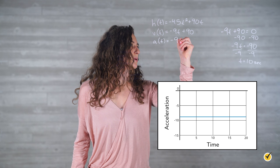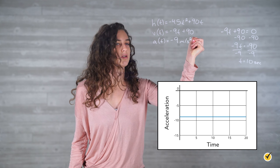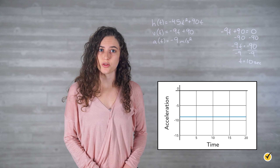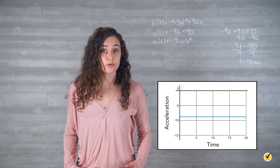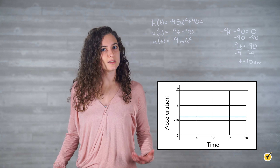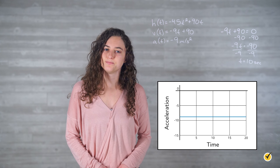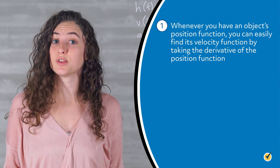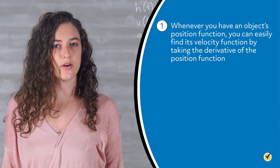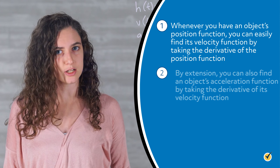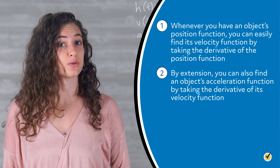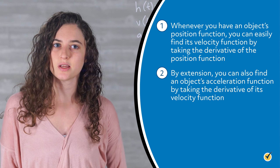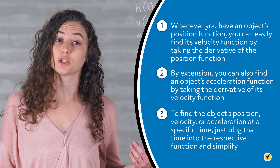Next, we need to know the rocket's acceleration function. Since acceleration can be found by taking the derivative of the velocity function, the acceleration is equal to negative 9. Our acceleration is negative 9 meters per second squared. Since this is a constant value, it doesn't change from one second to another. The acceleration of the rocket at 2 seconds is still equal to negative 9.